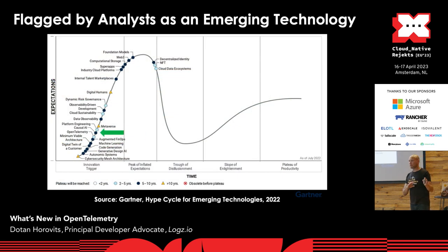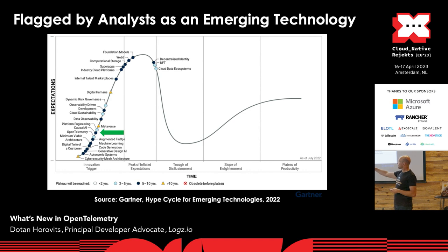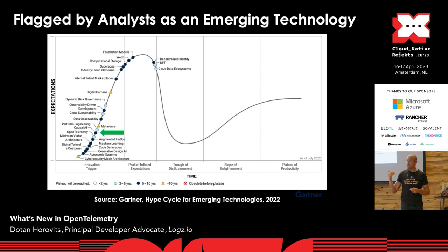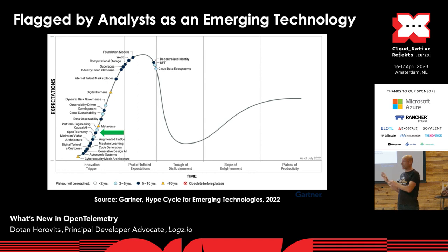Also outside of the CNCF report, analysts are starting to put it on their radar. From last year's Gartner hype cycle for emerging technologies, you can see OpenTelemetry at the innovation trigger. More interestingly, Gartner foresees it reaching the plateau of productivity within two to five years — showing how fast they believe the project is moving. And for getting buy-in within large enterprises, something written by analysts helps push OpenTelemetry into those large organizations.